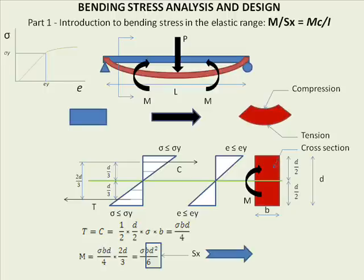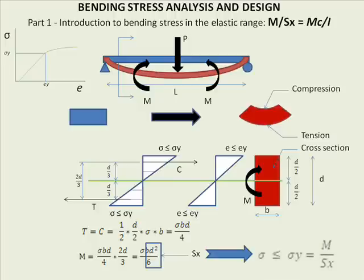The quantity bD²/6 is called the section modulus — it is a cross-sectional property, just like area is a cross-sectional property. The section modulus describes the distribution of bending stresses in the elastic range. For a rectangle, S = bD²/6. If you have any bending applied to a member and you know its section modulus, you can determine the maximum stresses. We write: σ ≤ σy, where σ = M/S — the applied moment divided by the section modulus.